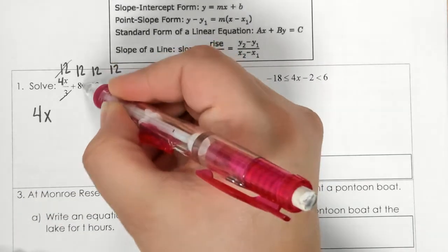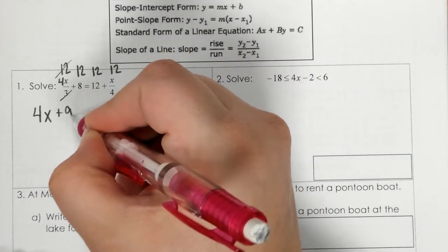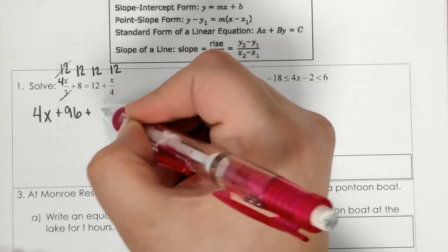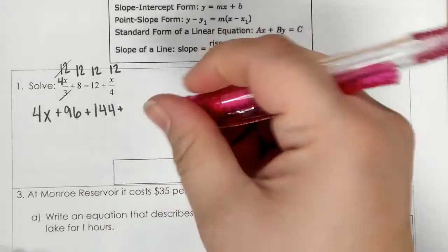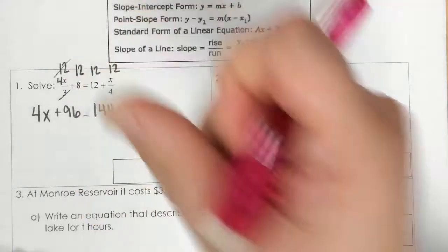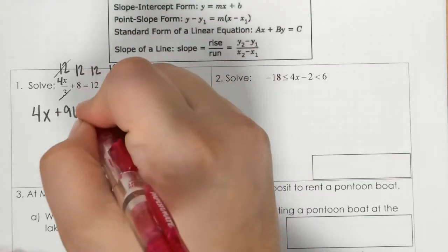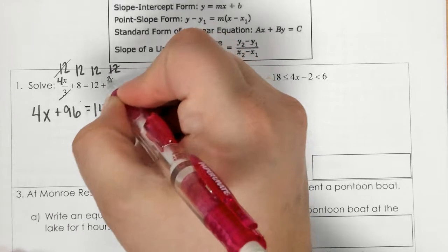12 times 8 is 96, 12 times 12 is 144, and then 12 divided by 4 gives me 3x.